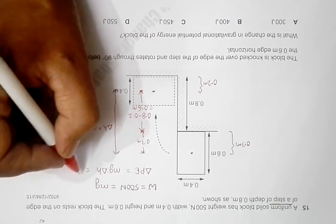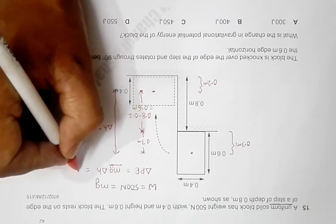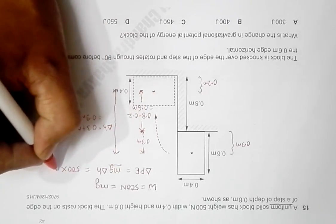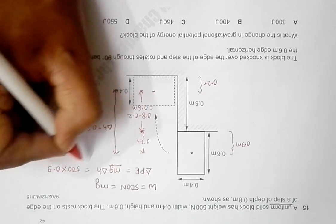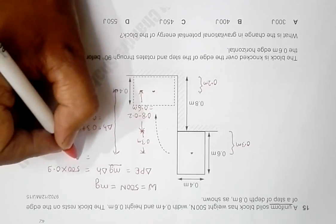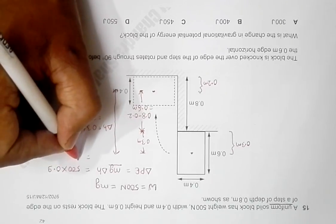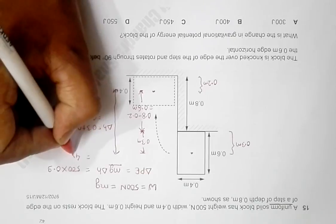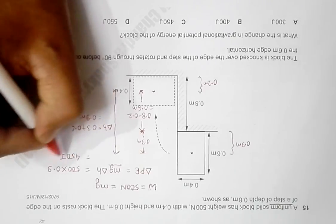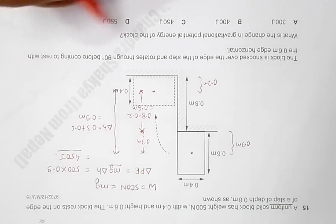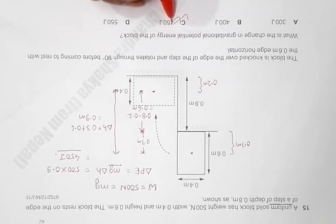Therefore, the change in PE will be equal to mg, which is simply 500, into 0.9, and that's equal to 450 joules. This is choice number C, so choice C should be the correct answer.